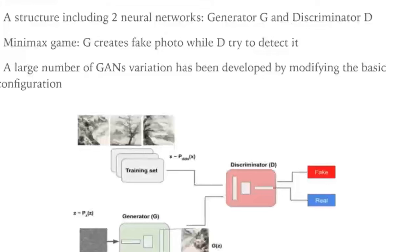There are basically two networks: one generator G and one discriminator D. The generator G tries to generate fake data from random noise, while the discriminator tries to classify the generated data as real or fake. G and D play a minimax game — G tries to maximize the probability that generated data lies on the target distribution, and D tries to minimize this. Because of the minimax mechanism, GANs can convert efficiently, and a large number of GAN variations have been developed by modifying the basic configuration.